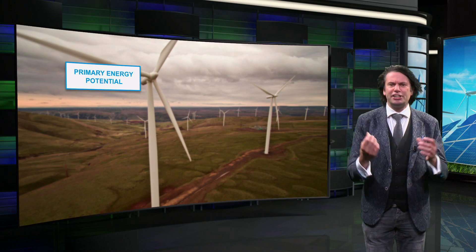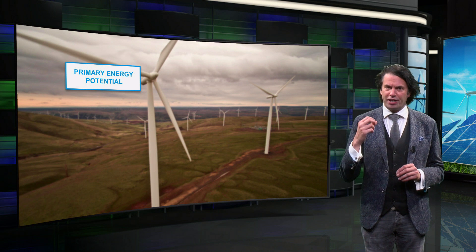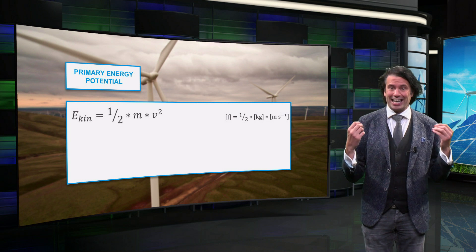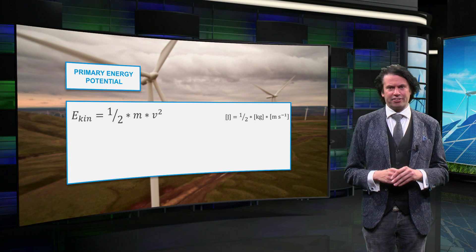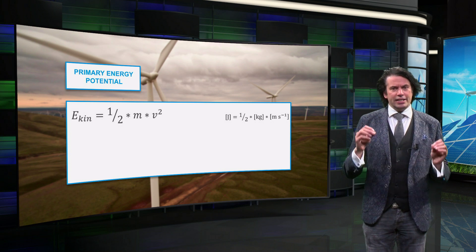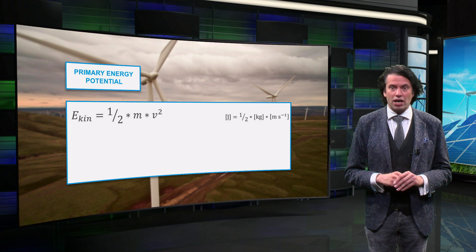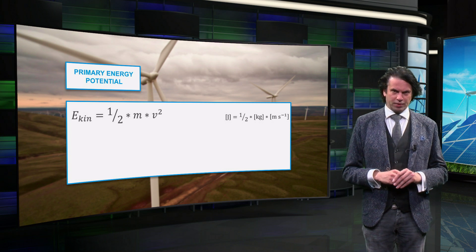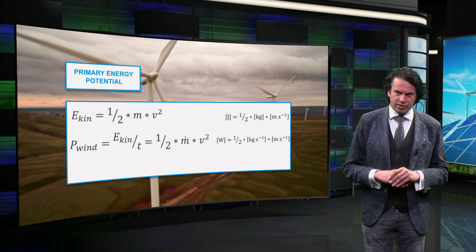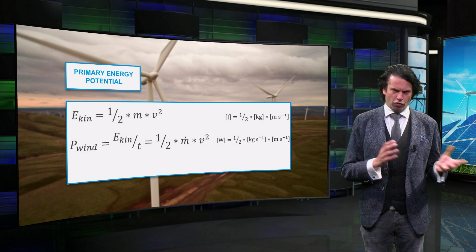The primary energy potential of the wind is given by the mass of air traveling at a certain speed. This is called kinetic energy and is characterized by this equation: E equals half the product of the wind mass and the velocity squared. Similarly, the wind power is calculated using the mass flow instead of the mass.